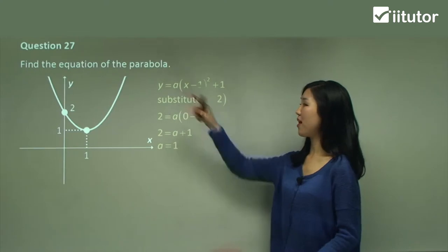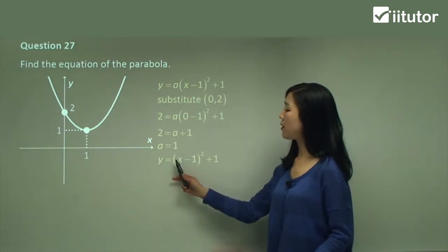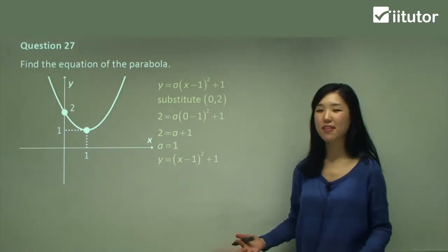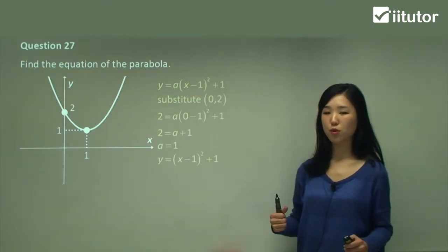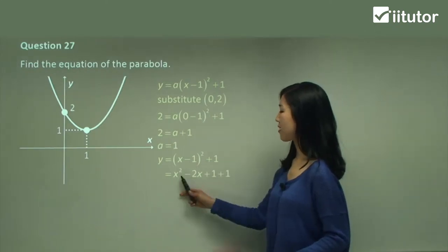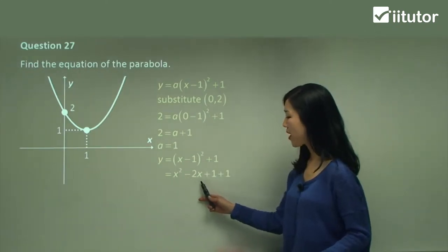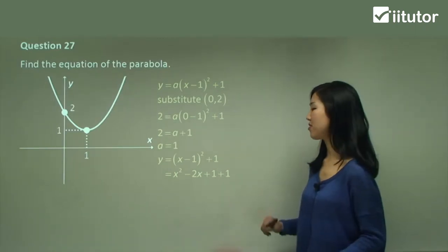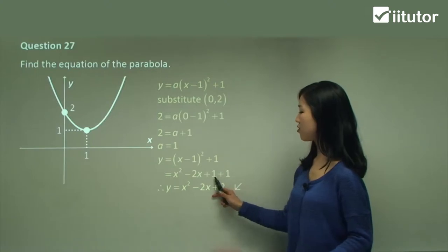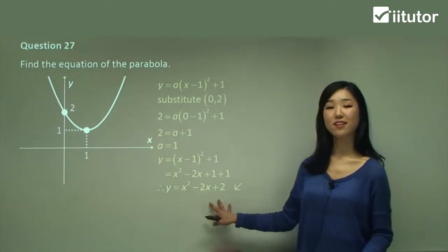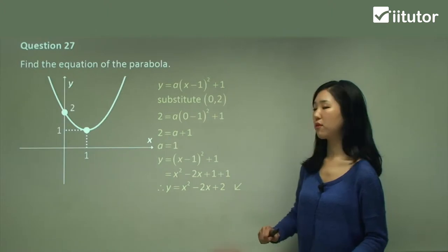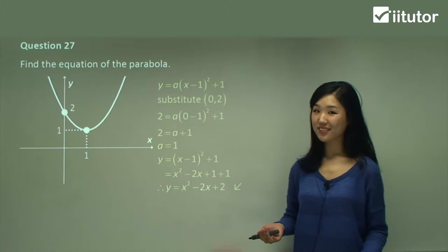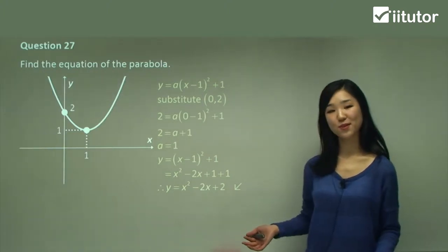So a is 1 — the coefficient is 1. Stick it back in: y equals 1 times x minus 1 squared plus 1. And it's a good idea to expand this out so it looks like a decent quadratic. So expanding: x squared minus 2x plus 1, and then add the remaining constant 1. Gather your like terms — add the two constants together to make 2. So the equation of this graph is x squared minus 2x plus 2.